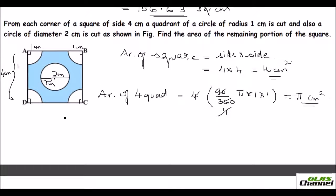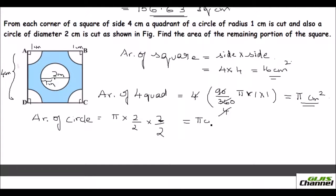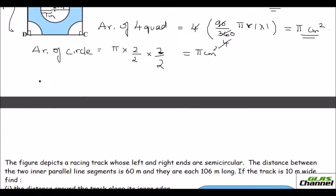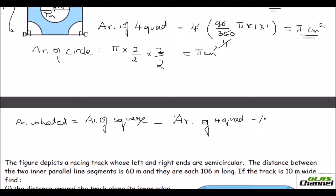The area of the inner circle: diameter is 2 cm so radius is 1 cm, giving π r² = π square cm. The area of the shaded portion equals area of square minus area of 4 quadrants minus area of circle: 16 − π − π = 16 − 2π ≈ 9.7 square centimeters.